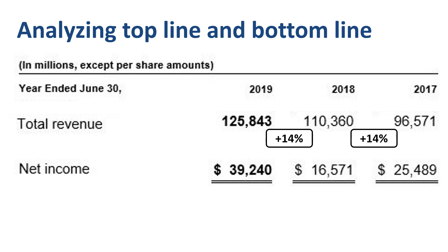Here's the bottom line — net income for the same years. Net income in 2018 declined from net income in 2017 by 35%, from $25 billion to $17 billion. Net income in 2019 increased by 137% compared to 2018, from $17 billion to $39 billion.